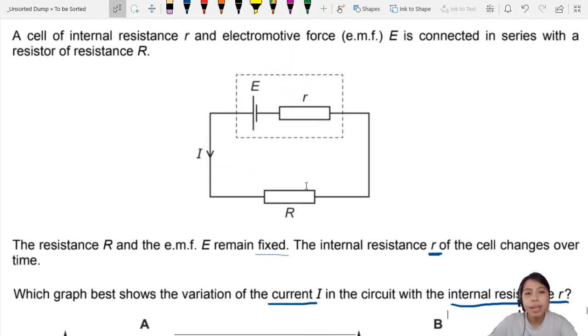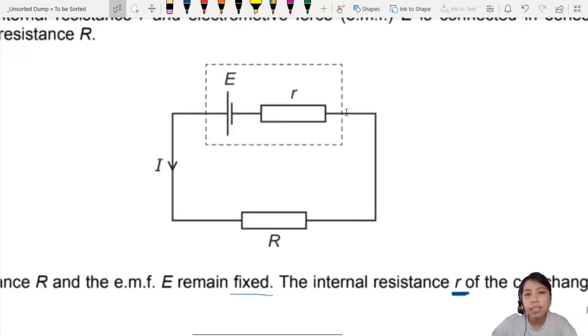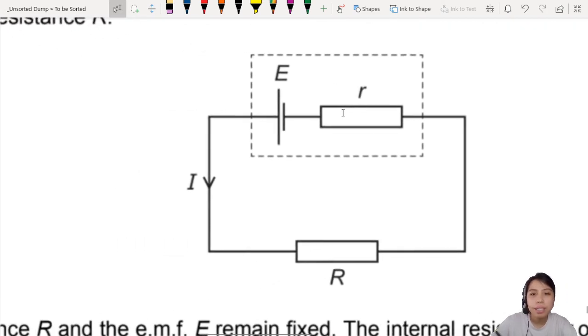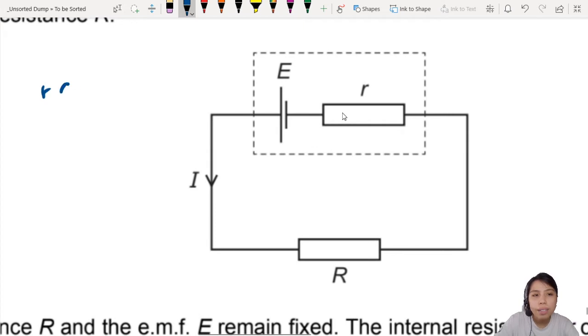So what happens when internal resistance increases? If you think of it logically, when r increases, there's more resistance in the circuit. So what happens to the current? Current will decrease. More resistance, less current. Everything else is constant.